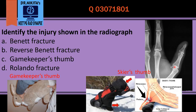Coming back to the radiograph we were shown: the injury involves the thumb, so Reverse Bennett's fracture is ruled out as it involves the fifth metacarpal. The fracture here is at the proximal phalanx, not at the metacarpal base, so this becomes gamekeeper's thumb — a skier's thumb or ulnar collateral ligament injury. Bennett and Rolando would be at the metacarpal base, while gamekeeper's thumb is at the proximal phalangeal base.